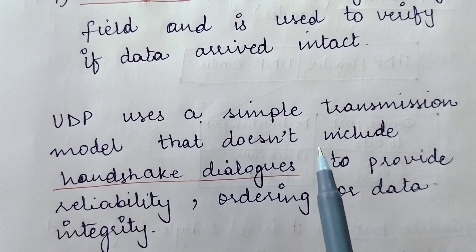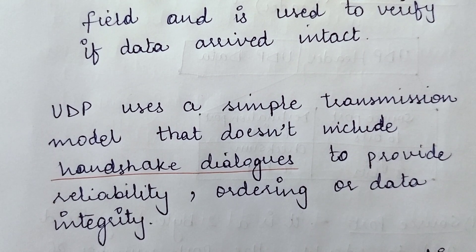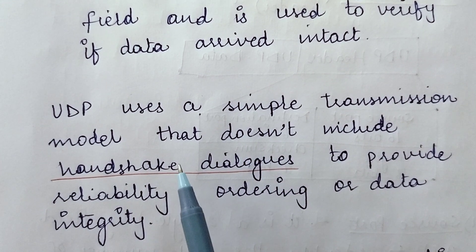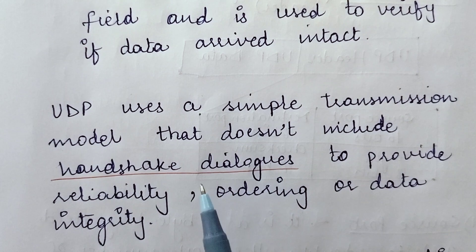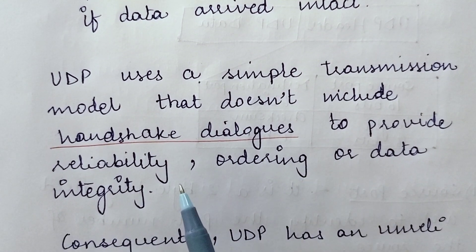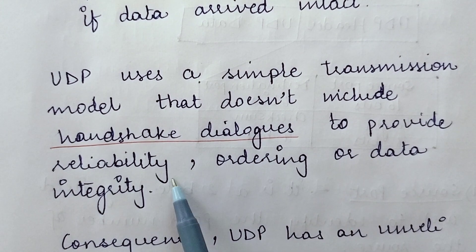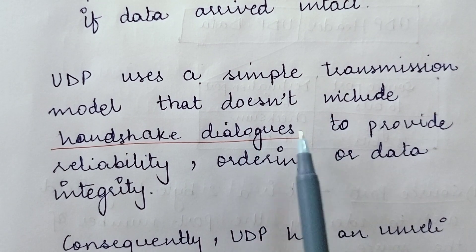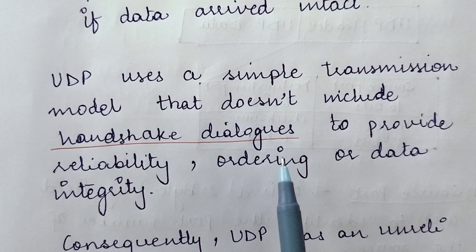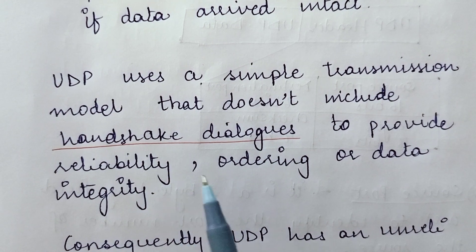UDP uses a simple transmission model. Looking at the UDP data transmission model, UDP does not include any handshake dialogues — that is, the three-way handshaking used in connection-oriented services is not done here. This means it doesn't provide reliability, ordering, or integrity of data. We establish a dedicated connection with three-way handshaking to ensure reliability, proper ordering, and data integrity. Since UDP does not do any handshaking, it cannot provide those benefits — it will not provide reliability, ordering of data, or data integrity.